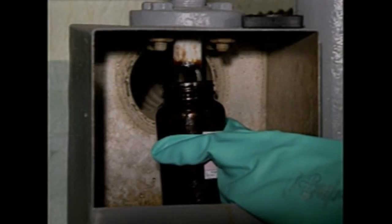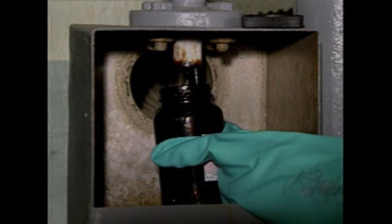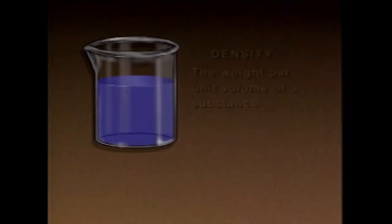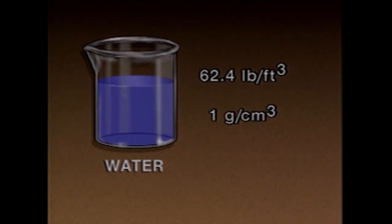Sometimes it's necessary to determine the relative amounts of substances in solutions or mixtures. One way to do this is through density and specific gravity measurements. Density is the weight per unit volume of a substance, commonly expressed in units such as pounds per cubic foot or grams per cubic centimeter. For example, the density of water is 62.4 pounds per cubic foot or one gram per cubic centimeter.